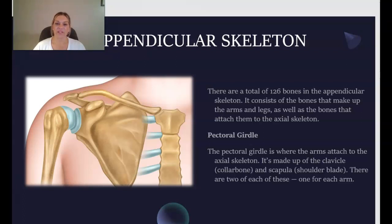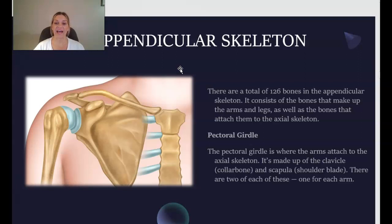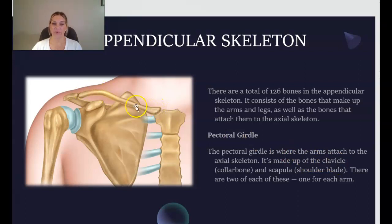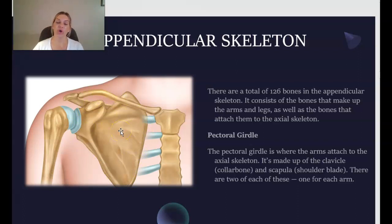Next we will discuss the appendicular skeleton. As mentioned, the skeleton is subdivided into the axial skeleton, which we just discussed, and the appendicular skeleton. There are a total of 126 bones in the appendicular skeleton. It consists of the bones that make up the arms and legs, as well as the bones that attach them to the axial skeleton. The pectoral girdle is where the arms attach to the axial skeleton. It is made up of the clavicle, or collarbone, and the scapula, or shoulder blade — two of each, one on each arm.